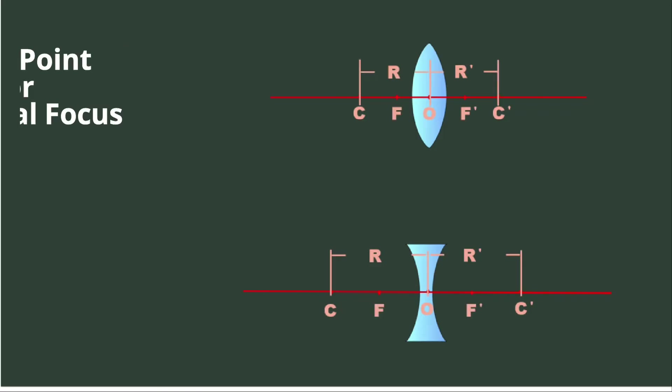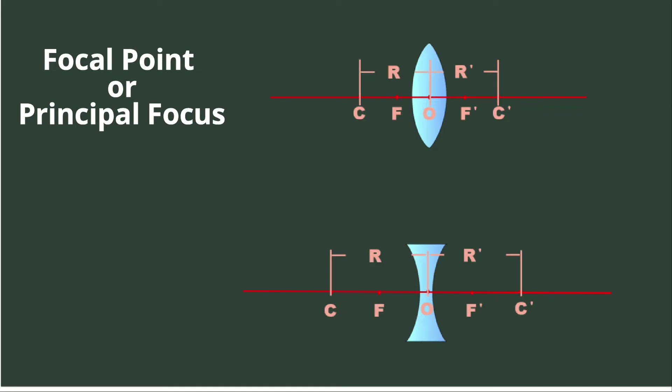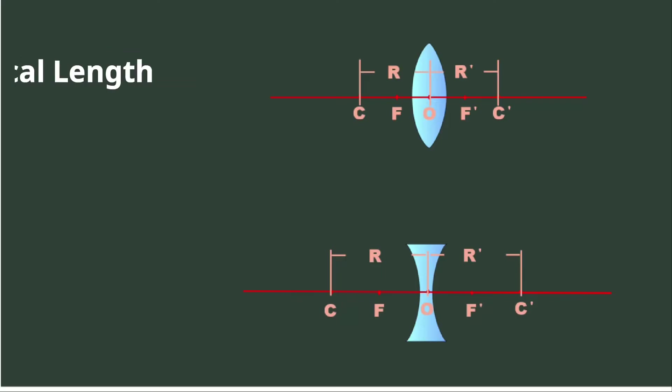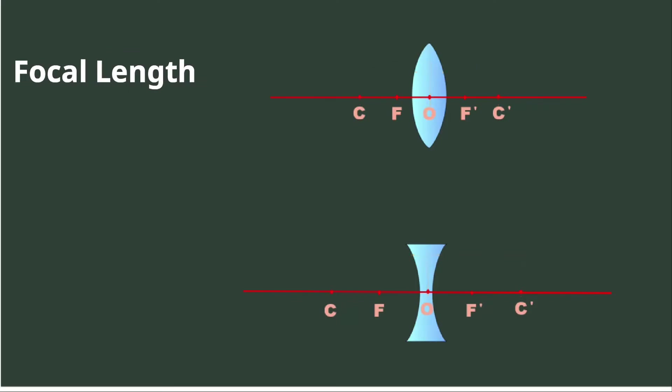The imaginary line joining the centers of curvature on both sides of the lens is called the principal axis. The distance from the optical center of the lens to the center of curvature is known as the radius of curvature. The focal point or principal focus for the converging lens is the point at which rays parallel to the principal axis converge. For the concave lens, it is the point from which such rays appear to meet. The distance between the focus and the optical center is called the focal length of the lens.